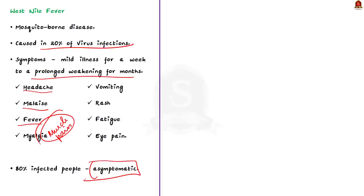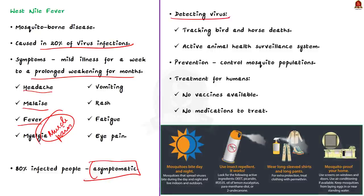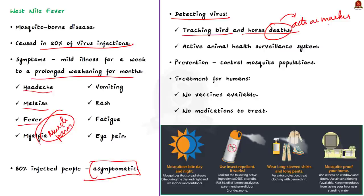The presence of this virus can be detected by tracking bird deaths and horse deaths, since infected birds die from the illness. Bird deaths act as a marker for virus transmission, and outbreaks in animals precede human cases. An active animal health surveillance system helps detect new cases in birds and horses, enabling prevention of human outbreaks. The main key to prevention is controlling mosquito populations.